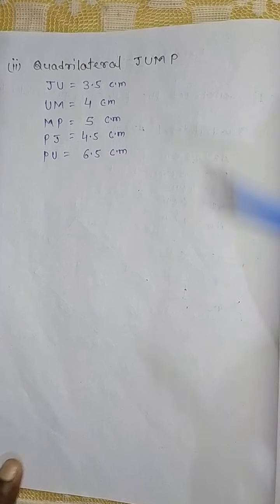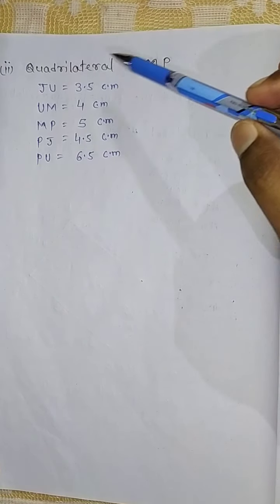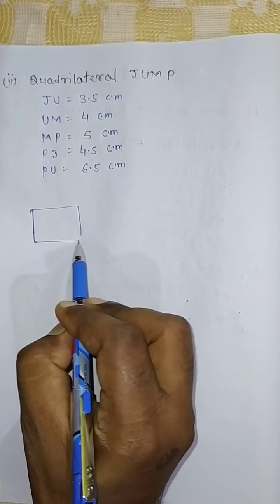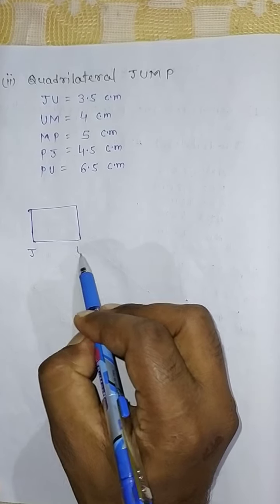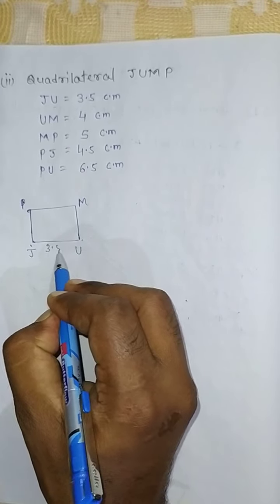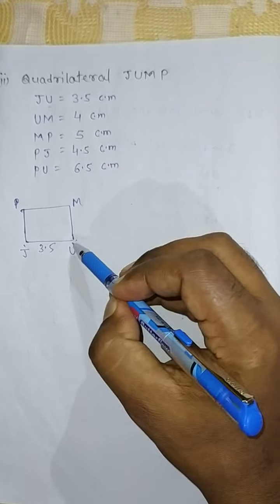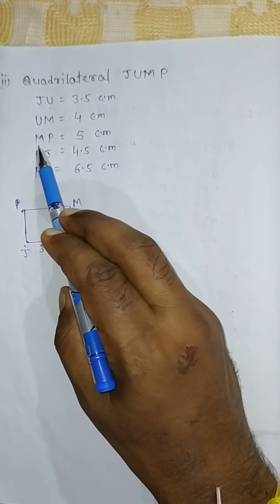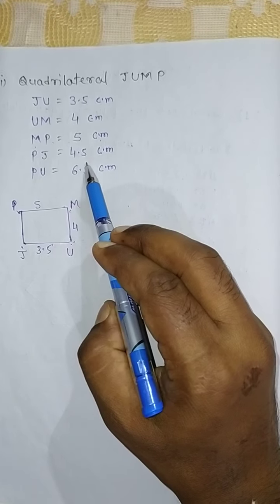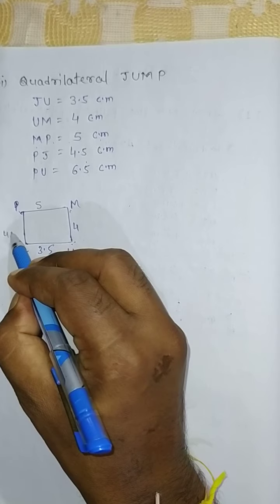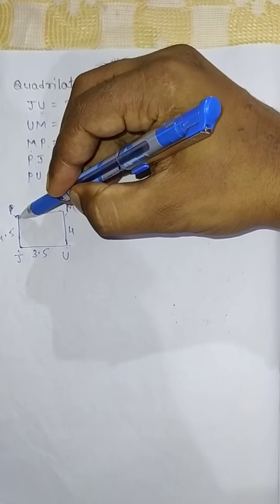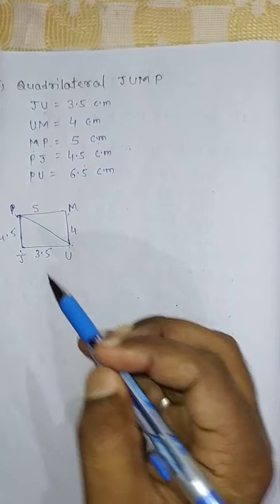Question Number 2: Quadrilateral JUMP. Draw a rough sketch of quadrilateral JUMP with vertices J, U, M, and P. The given measurements are: JU equals 3.5 cm, UM equals 4 cm, MP equals 5 cm, PJ equals 4.5 cm, and diagonal PU equals 6.5 cm. First, draw the diagonal PU that is 6.5 cm using a scale.